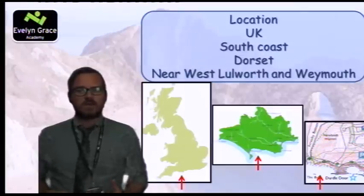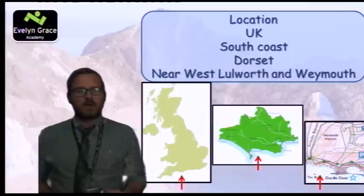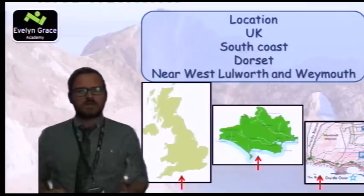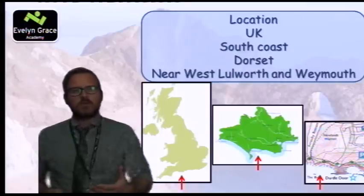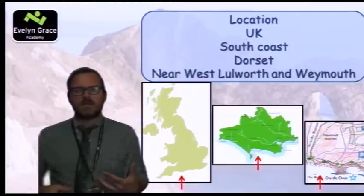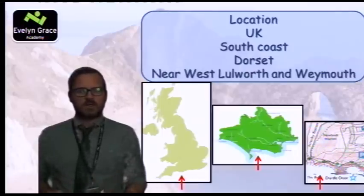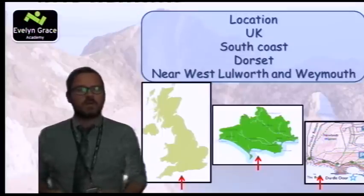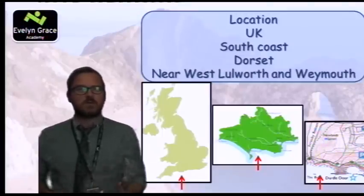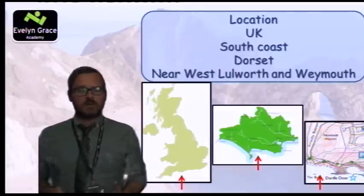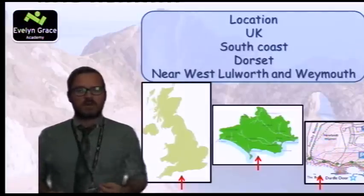The next picture is showing Durdle Door in a bit more detail. It's an ordnance survey map so it shows lots of detail and you can use it to help explain where the location is. It's near West Lulworth and Weymouth, which is probably the largest town near Durdle Door, which is actually quite a small area on the coast, although it's very significant in geographical terms.